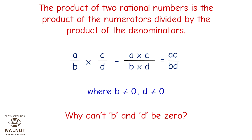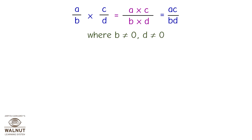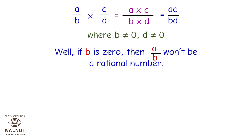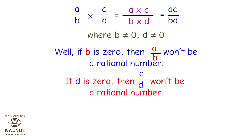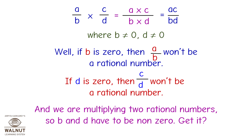Why can't b and d be 0? If b is 0, then a/b won't be a rational number. If d is 0, then c/d won't be a rational number. And we are multiplying two rational numbers, so b and d have to be non-zero.